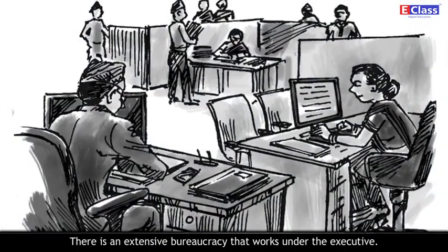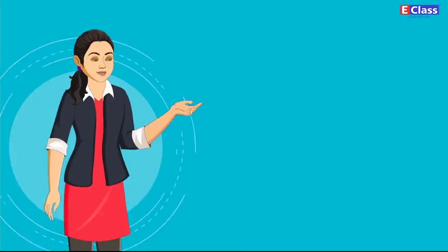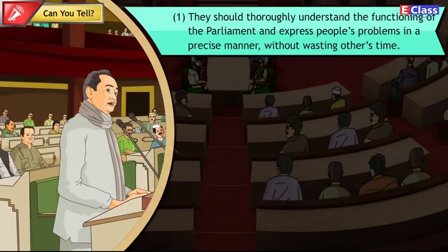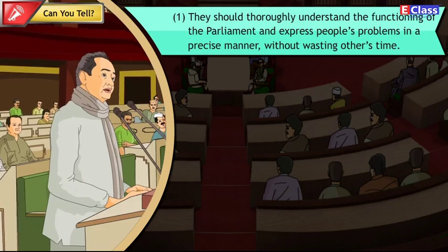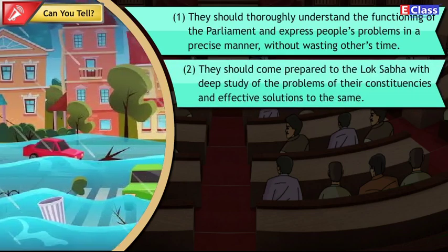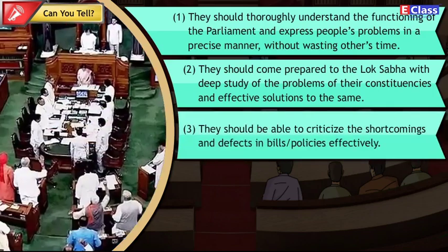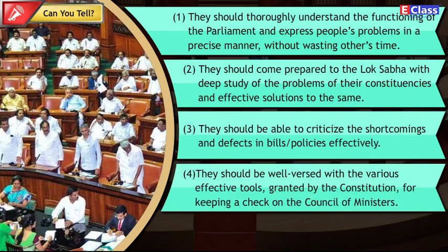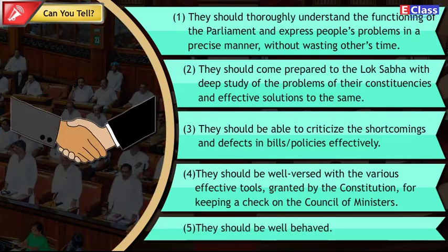There is an extensive bureaucracy that works under the executive, which will be studied in the sixth chapter. Members of Parliament should thoroughly understand the functioning of Parliament and express people's problems precisely without wasting others' time. They should come prepared to the Lok Sabha with deep study of the problems of their constituencies and effective solutions. They should be able to criticize shortcomings in bills or policies effectively, be well-versed with the constitutional tools for keeping a check on the Council of Ministers, and should be well-behaved.